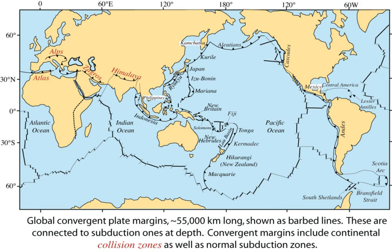Subduction zones are sites of gravitational sinking of Earth's lithosphere. They exist at convergent plate boundaries where one plate of oceanic lithosphere converges with another plate. The descending slab, the subducting plate, is overridden by the leading edge of the other plate. The slab sinks at an angle of approximately 25 to 45 degrees to Earth's surface.